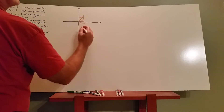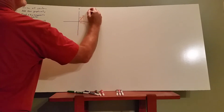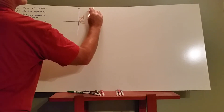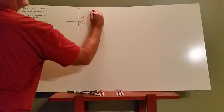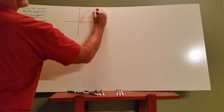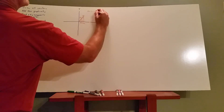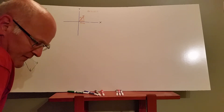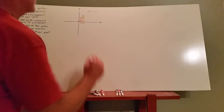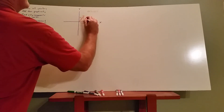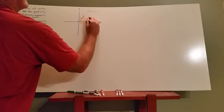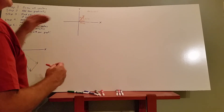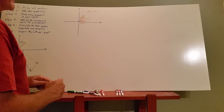The y component of the wind vector is given by 60 times sine of 60 degrees, which works out to approximately 51.96 meters per second. That's the wind vector broken up into its x and y components, and they're both going to be positive.